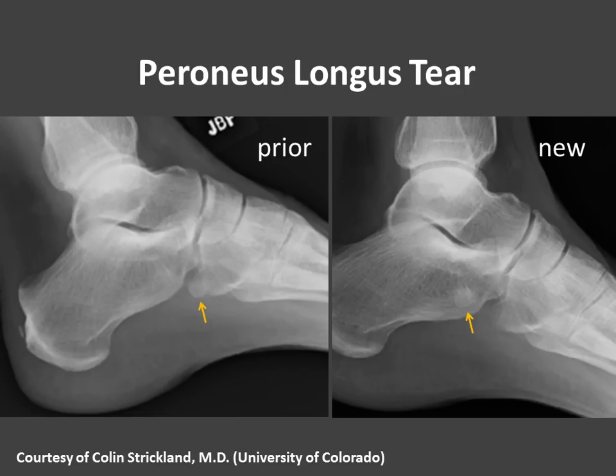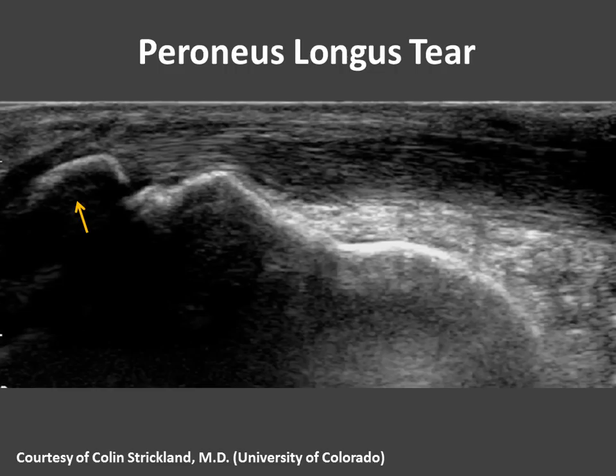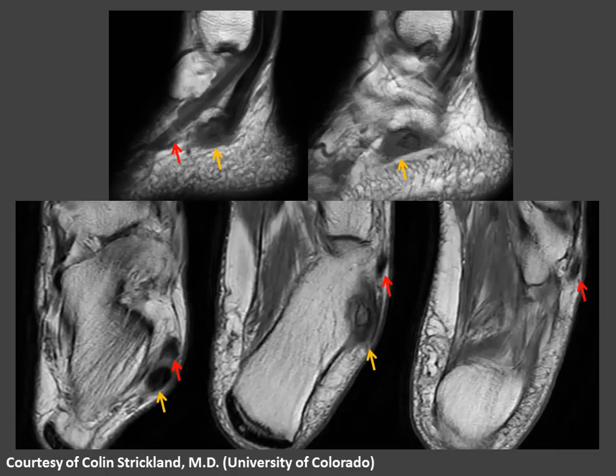Here's a case from a colleague at the University of Colorado showing a change in position of the os peroneum between an old and a new exam, raising suspicion for an underlying peroneus longus tendon tear. On ultrasound, we see a thickened and lax peroneus longus tendon attached to a fragmented os peroneum. Here's the corresponding MRI — again, an abnormal thick peroneus longus attached to a fragment, with a more normal-appearing peroneus brevis.